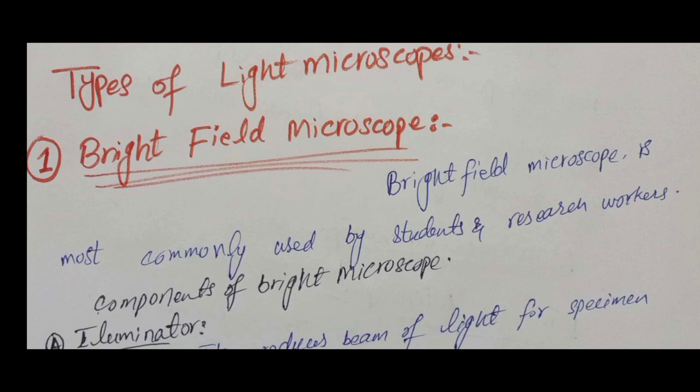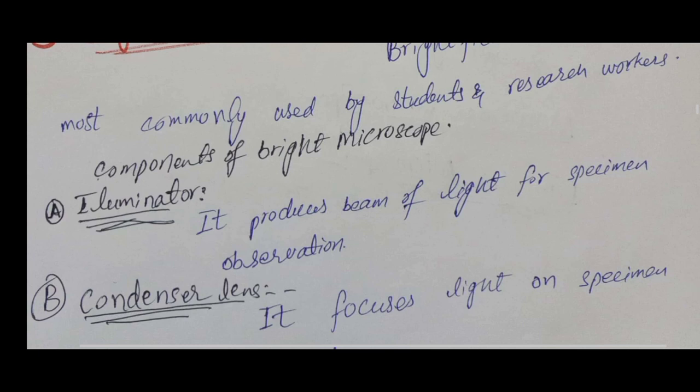We start from the bright field microscope, which is the most commonly used microscope by students and researchers in labs. There are five main parts of the bright field microscope. The first part is the illuminator — its function is to produce a light beam for observation.